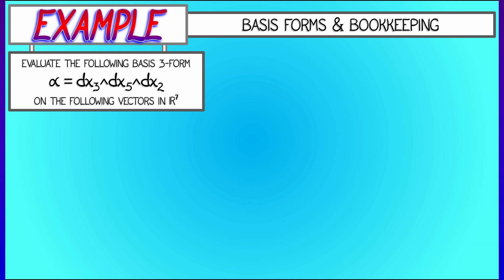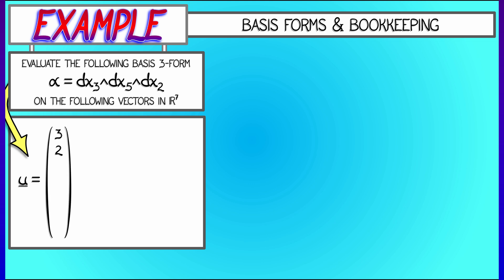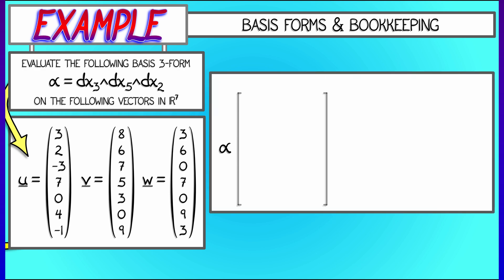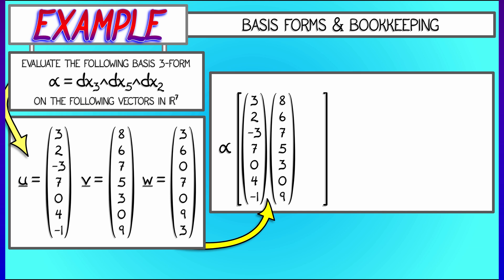What happens when you evaluate that on the following three vectors in R^7? The first, u, is (3, 2, -3, 7, 0, 4, 1). The second vector, v, is (8, 6, 7, 5, 3, 0, 9). And the third vector, w, is (3, 6, 0, 7, 0, 9, 3). How do we evaluate that basis three form? Well, what we do is we think about taking those three vectors, u, v, w, and stack them as columns of a matrix.